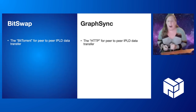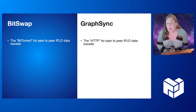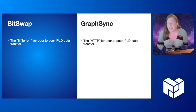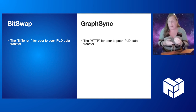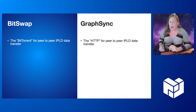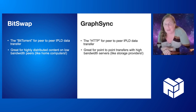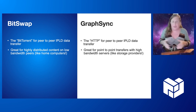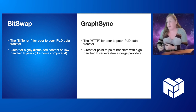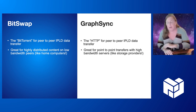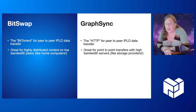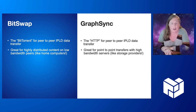Both of these protocols move IPLD data around LibP2P networks. The analogy I've been using to help non-programmers understand is this: BitSwap is roughly designed like BitTorrent, while GraphSync is roughly designed like HTTP. That means they shine best in different scenarios. BitSwap, like BitTorrent, is good for moving highly distributed content from many peers where each individual peer might have low bandwidth, like a home computer. GraphSync, like HTTP, functions great for downloading data from high bandwidth servers, like storage providers.